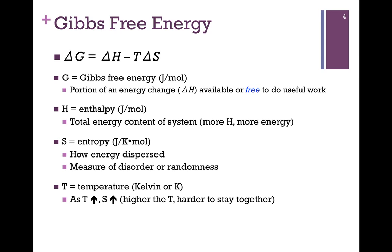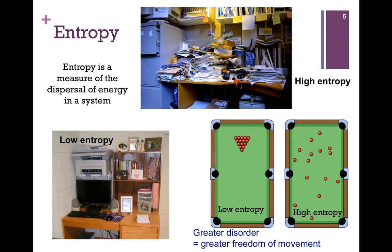Let's look more closely at the concept of entropy. At the top of our slide, we have a photograph of a student desk that represents a high state of disorder — high entropy. The desk on the lower left has greater order and therefore lower entropy. Perhaps a better illustration is the one from your book on the lower right: the billiard balls on the left are highly ordered, representing low entropy. However, once the cue ball strikes the rack, they scatter in every direction, dispersing the energy and creating a condition of high entropy — a positive change in entropy, a condition of greater disorder, or greater freedom of movement.